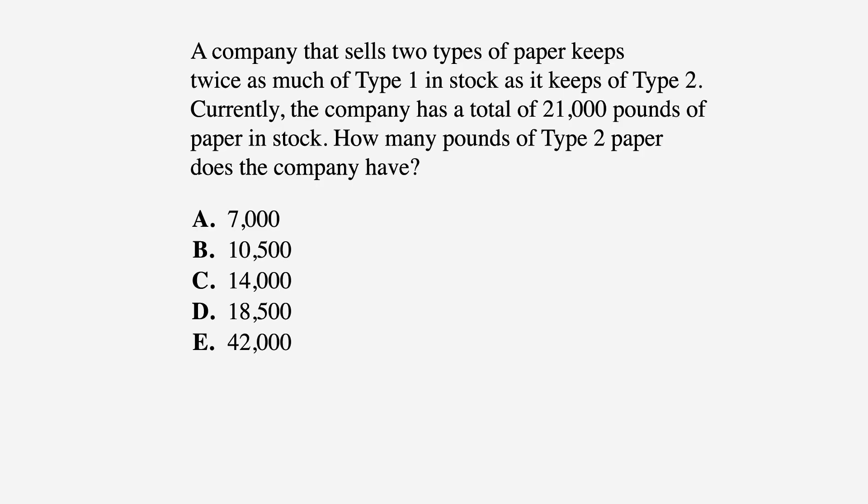Let's jump right in with a problem. A company that sells two types of paper keeps twice as much of Type 1 in stock as it keeps of Type 2. Currently, the company has a total of 21,000 pounds of paper in stock.